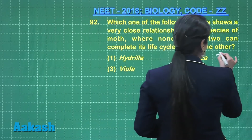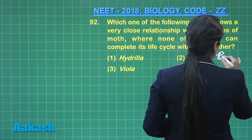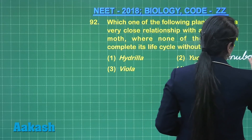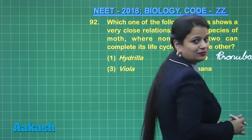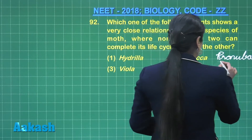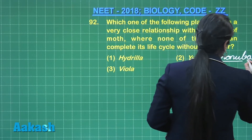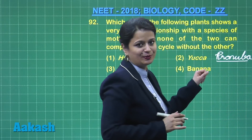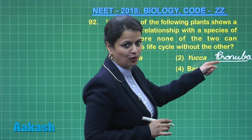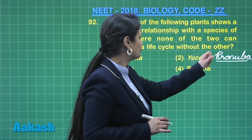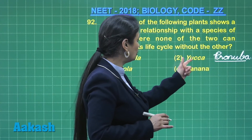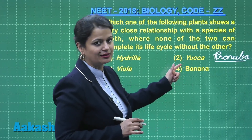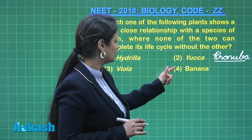The name of that moth is pronuba moth, and it is a symbiotic relationship. That is, Yucca can only be pollinated by pronuba moth, and pronuba can only complete its life cycle inside the Yucca plant.